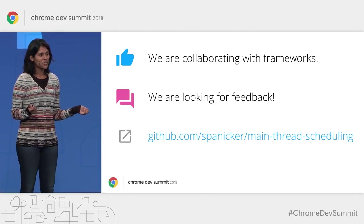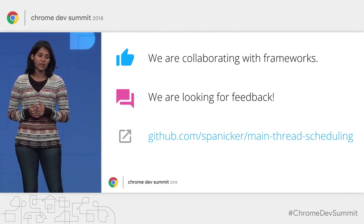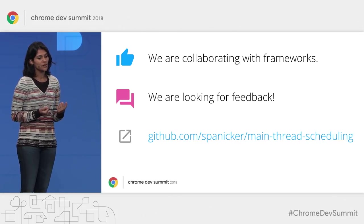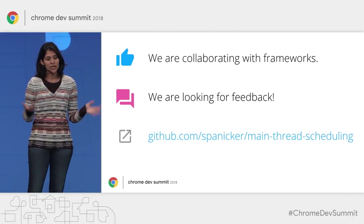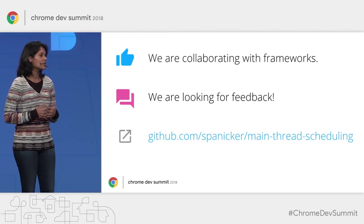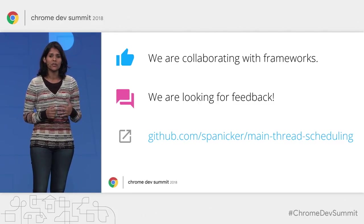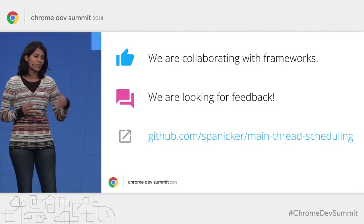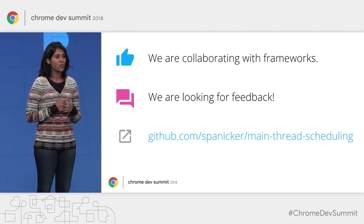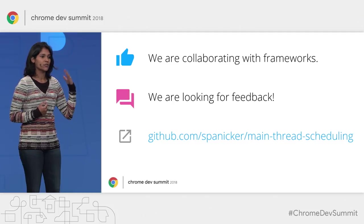All the API proposals shown today are super early stage — we don't yet know what the end game will be. This is a great time to give us feedback and help chart the course. For web developers, there is an opportunity with improved scheduling even using existing primitives properly. For framework authors, we urge you to consider a scheduling system and collaborate with us now to develop the right set of APIs. React's work on concurrent mode and time slicing has proven that frameworks can play a major role in improving app responsiveness. We're already working with React and actively looking to form partnerships with other frameworks and apps, via issues on our GitHub repo.